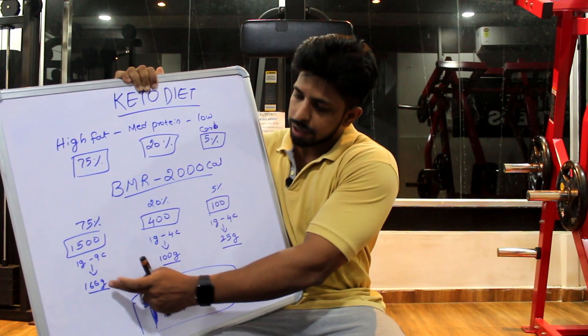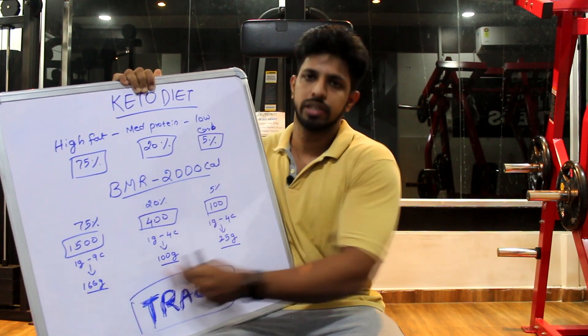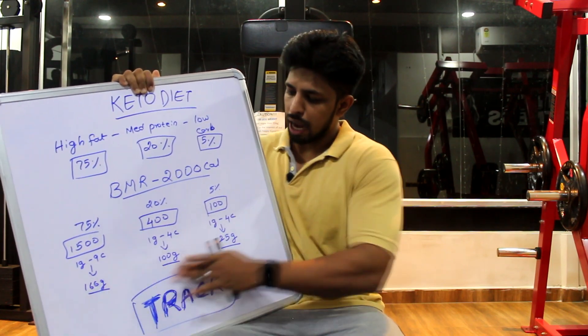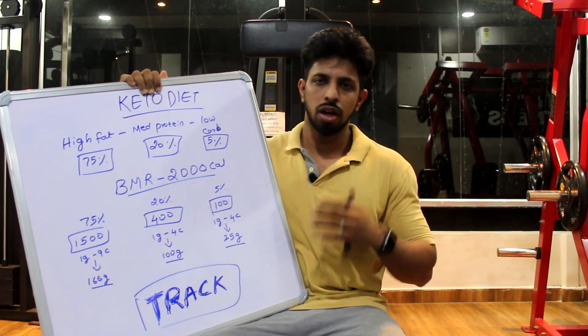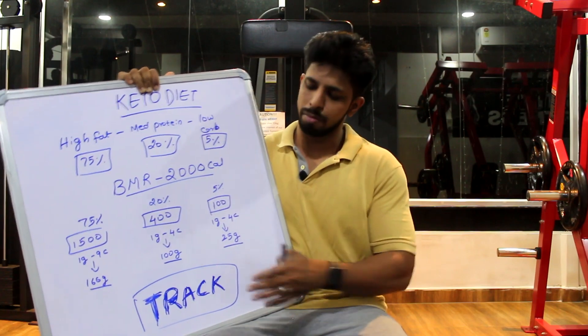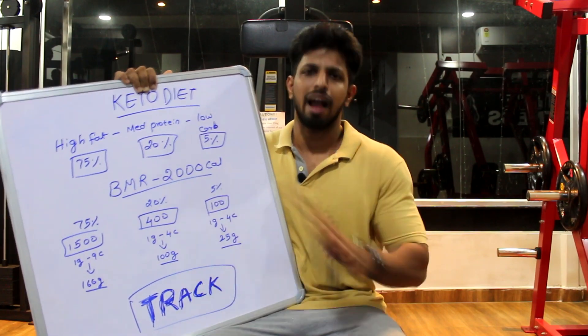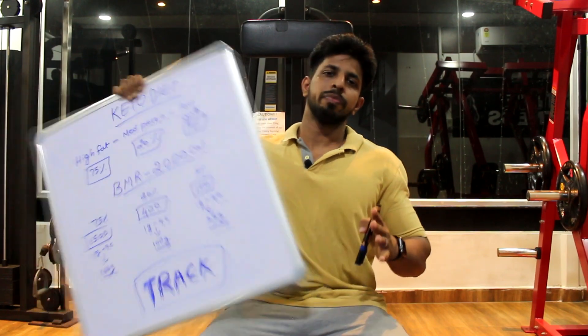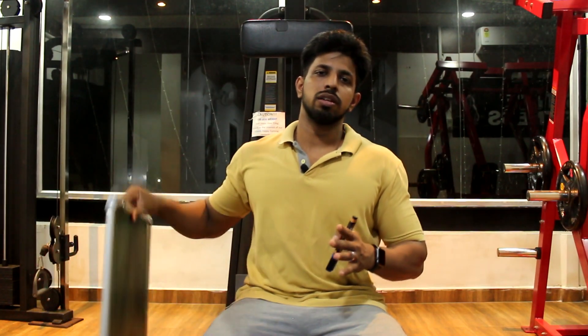So once you add your BMR, it will give you the fat in grams. Once we get the grams, we will track the next step. We will track calories — how many grams of fat, protein, and carbs you need.